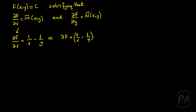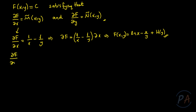So df equals (1/x minus 1/y) dx. Integrating both sides, f of xy equals ln|x| minus x/y plus a generic function h of y. To determine h of y, I use the second condition: the partial derivative of f with respect to y. The derivative of ln|x| with respect to y is zero, so this gives x/y².